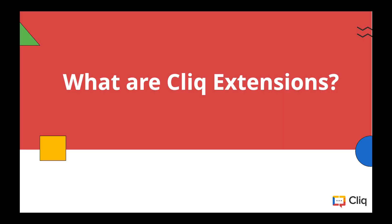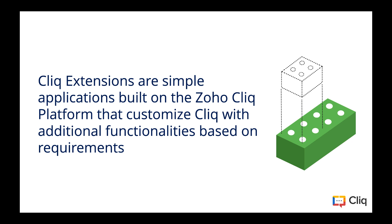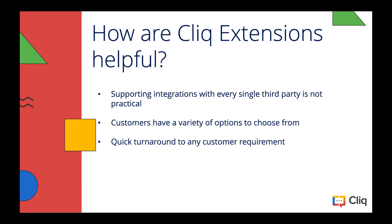We've been mentioning Cliq extensions a lot, and now it's time to understand what these extensions are. An extension is just an addition or a part that is added to an already existing product — that is exactly what Cliq extensions are. They are simple software applications built on the Zoho Cliq platform which help you extend or customize Cliq capabilities. A good analogy here is Google Chrome extensions. The platform and the ability to build extensions are useful because you are at liberty to integrate Cliq however you like and choose extensions from a variety of options in the marketplace.